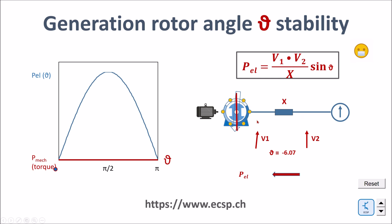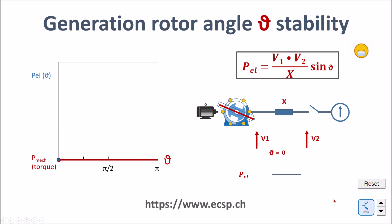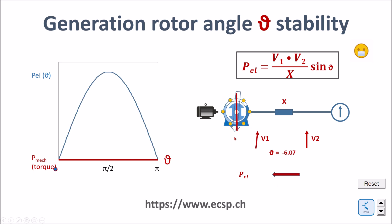When we close the breaker and the connection is established between the generator and the grid, there is immediately a current flowing from the generator to the grid. This current flows through the inner inductance of the generator, and you see that there is immediately an angle between the rotating field through the three-phase coils of the stator and the rotating field of the rotor. Let's watch the closing instant again — the breaker is open, and at that very moment you see how the angle between these two arrows appears larger than zero.